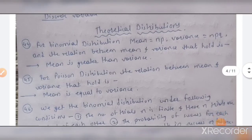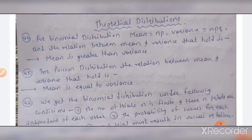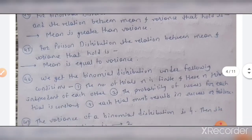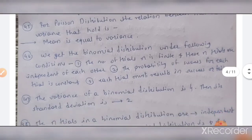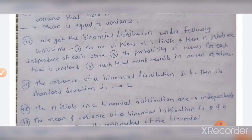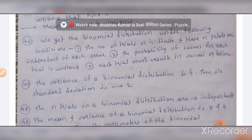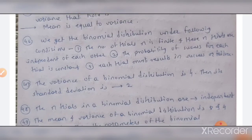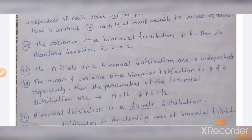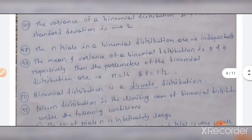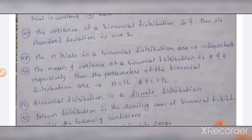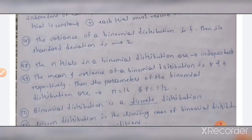For a binomial distribution: mean equals np and variance equals npq, and mean is greater than variance. For a Poisson distribution, mean equals variance. Binomial distribution applies under these conditions: the number of trials n is finite, the n trials are independent, the probability of success for each trial is constant, and each trial must result in either a success or a failure. The variance of a binomial distribution is 4, so its standard deviation equals 2. If the mean and variance of a binomial distribution are 8 and 4 respectively, then n equals 16 and p equals 1 by 2. The binomial distribution is a discrete distribution.